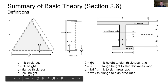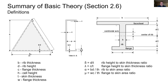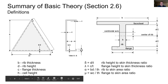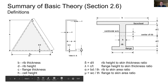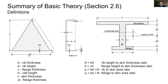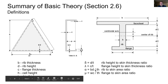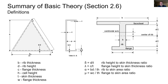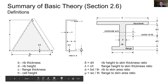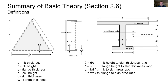Another important parameter is alpha — the ratio of the area of the skin to the area of the rib. For alpha equal to one, the rib area equals the skin area. The mu parameter, which we won't look at much, is the ratio of the flange area to the skin area. Any questions on this so far?